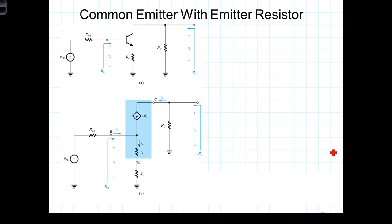In this video, we're going to take a look at the common emitter amplifier with an emitter resistor added to the emitter circuit. As we saw with field effect transistors, where we added a resistor to the source terminal, adding an emitter resistor is also beneficial.